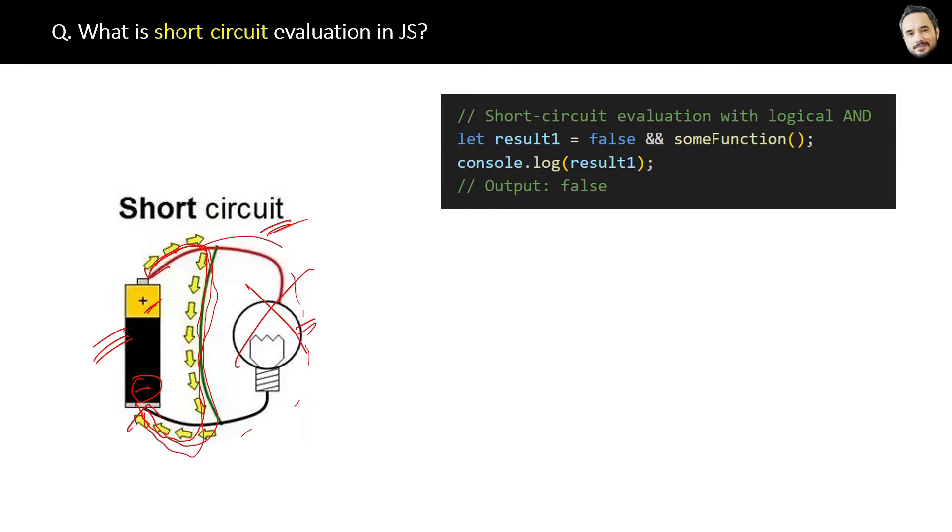Here we have a variable result1 which is equal to this expression. Here we have used the AND or logical operator, and we know that as per the AND operator, if any one of the left side or right side condition is false, then AND will return the false result. In this case, the left side is false.